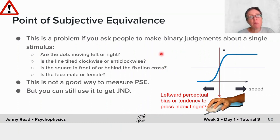That could be a problem if you were asking people to make binary judgements about a single stimulus. If you wanted to ask, are the dots moving left or right? Or is the line tilted clockwise or anticlockwise? Is the square in front of or behind the fixation cross? Is the face male or female? And so on.